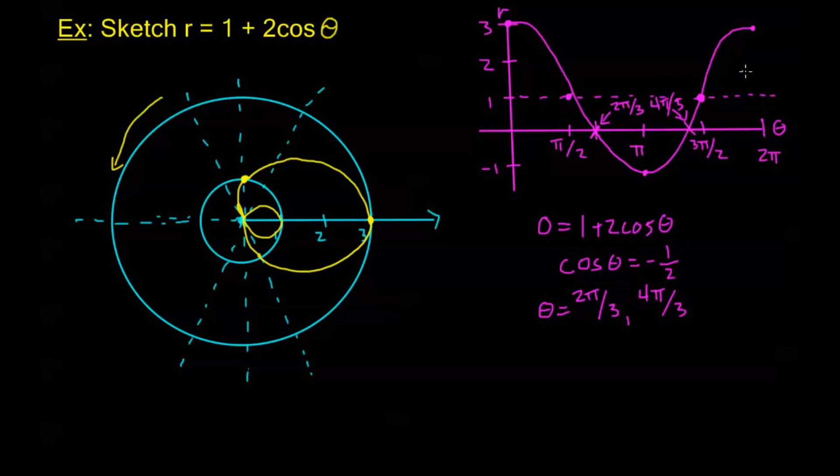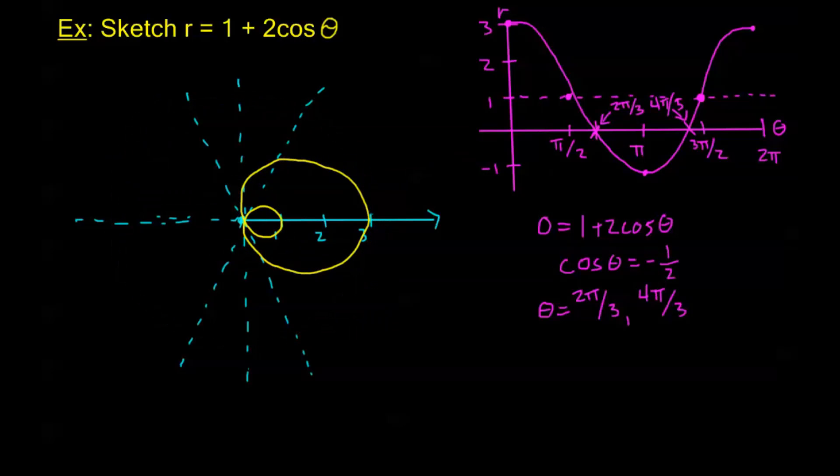Now there's nothing wrong with just continuing to use the reference graph and doing exactly what we just did by using the reference graph. That's absolutely fine but if you see the symmetry and you know how to use it, it can really cut down on the amount of time this takes. Okay, let me take away these circles now.